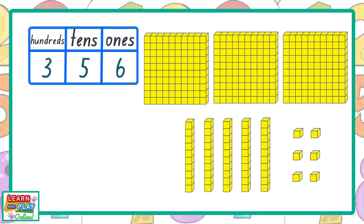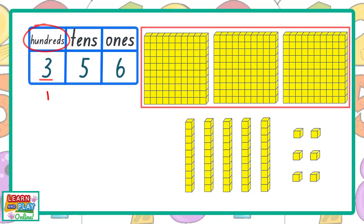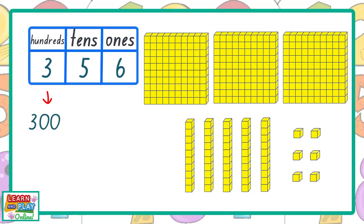Now let's have a look at the place value of each of the digits. The digit 3 has been placed in the hundreds column, which means it has a value of 300. The digit 5 has been placed in the tens column, which means it has a value of 50. The digit 6 has been placed in the ones column, which means its value is just 6. So when you have 300 plus 50 plus 6, you have a total of 356.